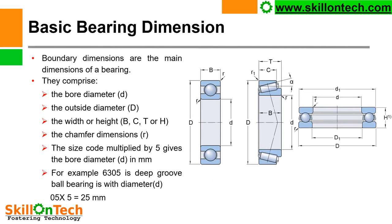Basic bearing dimensions: boundary dimensions are the main dimensions of the bearing. They comprise the bore diameter d, the outside diameter D, and the width or height B, C, T, or H. In case of ball bearings this is B; for roller bearings the width is given as T; and for thrust bearings it is shown as H. Chamfer dimensions are given as R.